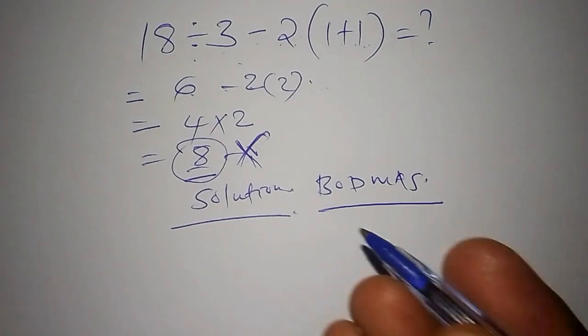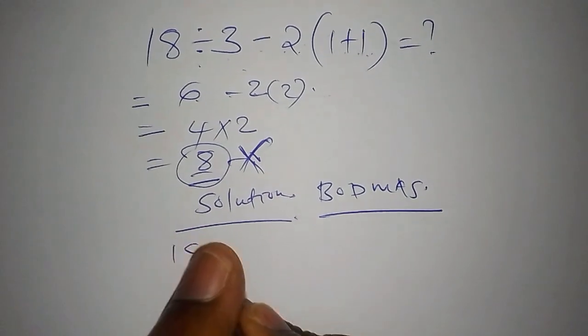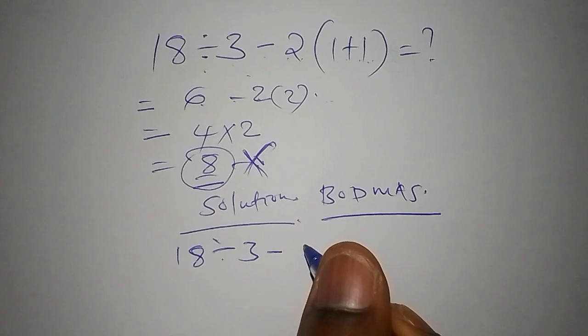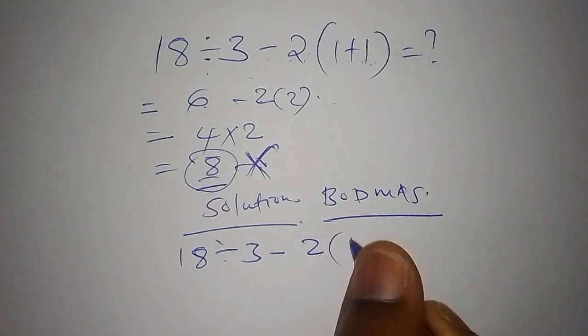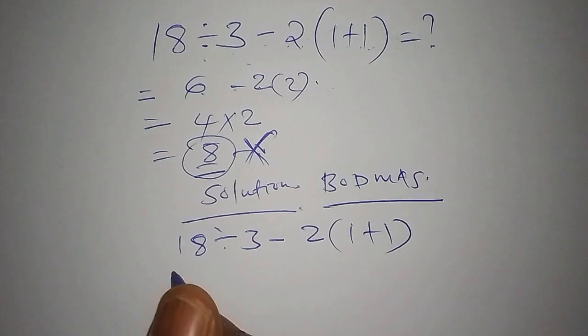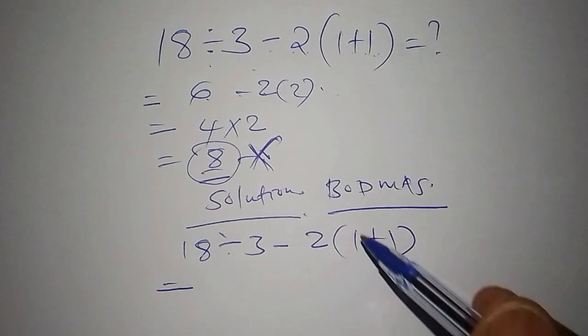So we have 18 divided by 3 subtract from 2 into bracket 1 add to 1. So this one you say, this equals - we start with the bracket first. So we work out the bracket.